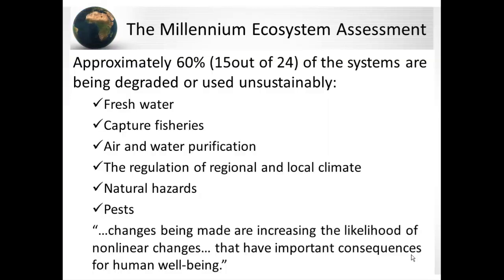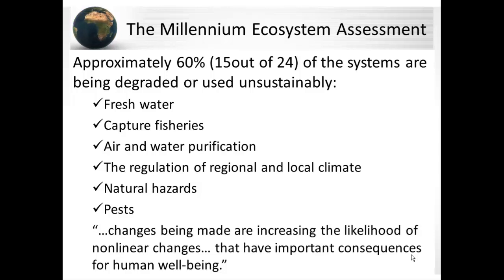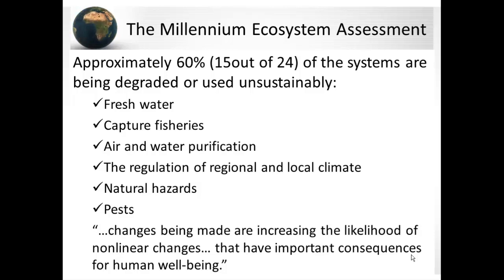The Millennium Ecosystem Assessment is a project undertaken by over 1,000 internationally recognized experts from 2001 to 2005 who assessed the state of the world's major ecosystems and the consequences of human-induced changes. There is established but incomplete evidence that changes being made are increasing the likelihood of nonlinear changes in ecosystems, including accelerating, abrupt, and potentially irreversible changes that have important consequences for human well-being. Examples of such changes include disease emergence, abrupt alterations in water quality, the creation of dead zones in coastal waters, the collapse of fisheries, and shifts in regional climate.